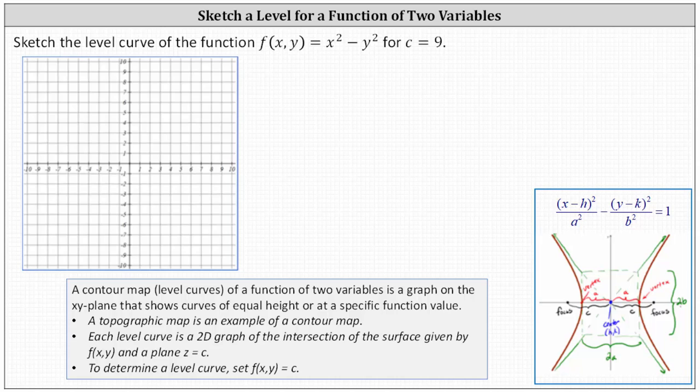Recall each level curve is a 2D graph of the intersection of the surface given by f of x comma y and a plane z equals c where c is a constant. Notice in our case we have c equals nine. To determine the equation of a level curve we set f of x comma y equal to c.